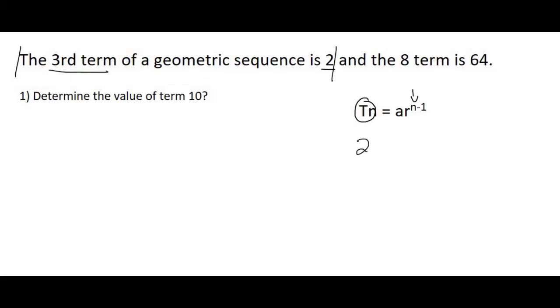So they're telling us that the third term is equal to 2. So the value is 2. A we don't know, doesn't matter. R we don't know, doesn't matter. N is your position. Well, they've told us that it's the third term, so we'll say 3 minus 1. So we'll then just simplify, so that will become R to the power of 2. And that's it. There's nothing more you can do.